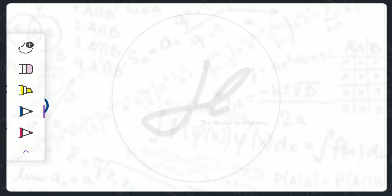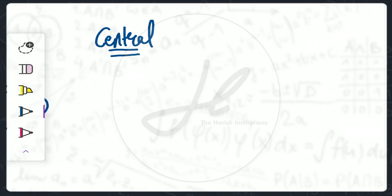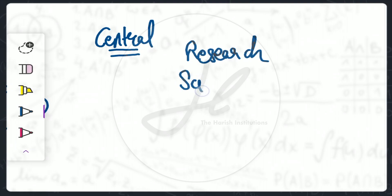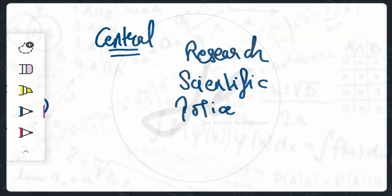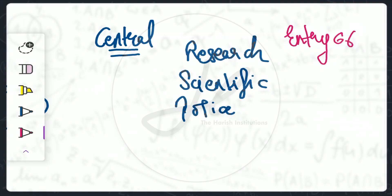In the central list, education-related items include: research centers, scientific or technical institutions, training of police officers, and professional or vocational technical training. There is also Entry 66 in the central list. Entry 66 — meaning rule 66 — covers coordination and maintenance of standards in institutions for higher education or research, and scientific and technical institutions.